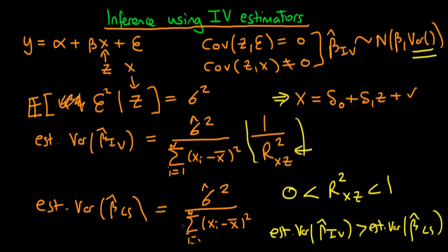That's definitely something to bear in mind when thinking about whether to use an IV estimator, because especially with a very weak instrument, the instrumental variables estimated variance can be significantly greater than that of the least squares estimator. This makes it more important for IV estimators to have a much larger sample size, to increase the total sum of squares term in the denominator.